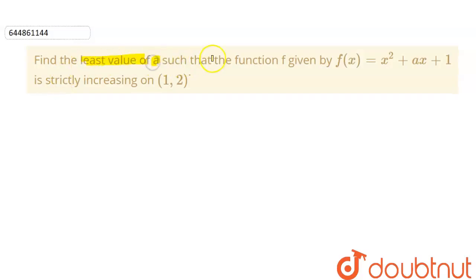The question is to find the least value of a such that the function f is given by f(x) = x² + ax + 1 is strictly increasing in the interval (1, 2).